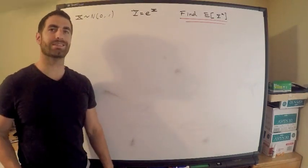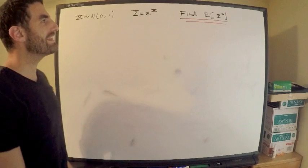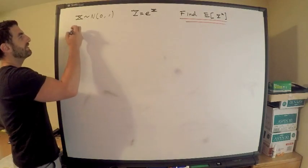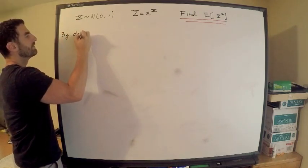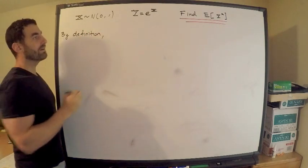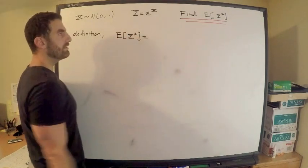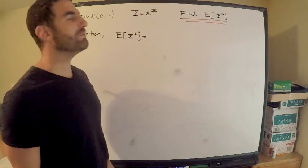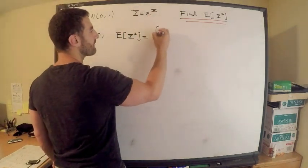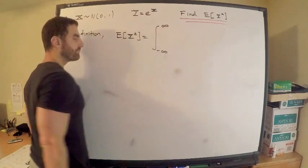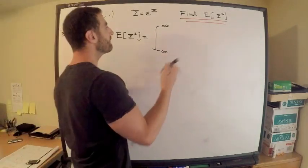It is quite easy to get overwhelmed with a question like this. I recommend you immediately just write down the definition. What is the definition of the k-th moment of Y? By definition, let's just write that real quick. The k-th moment of Y is equal to, now this is absolutely going to be a continuous random variable.